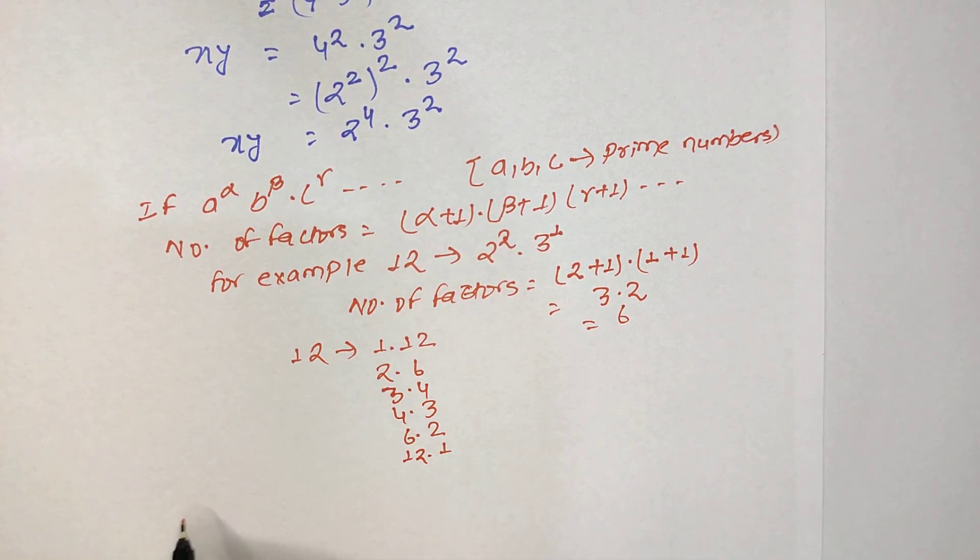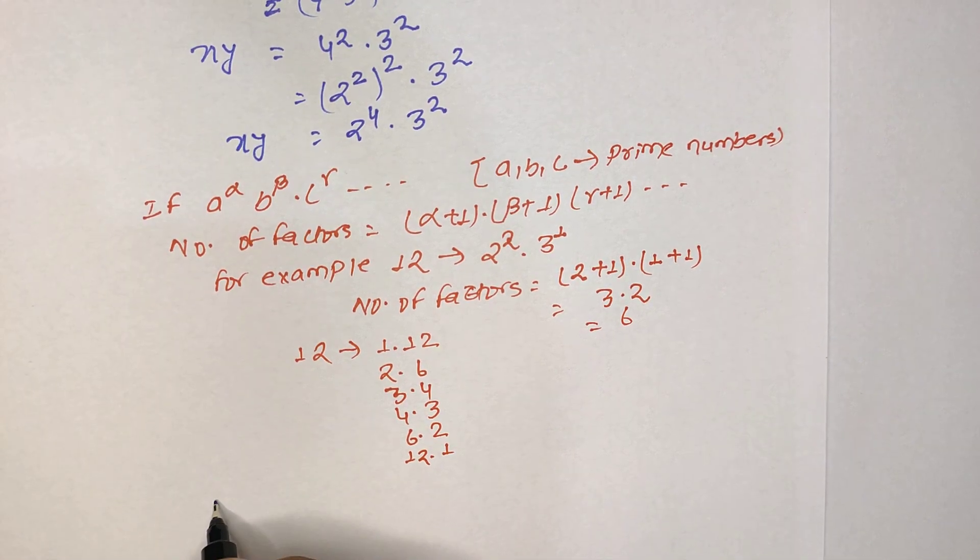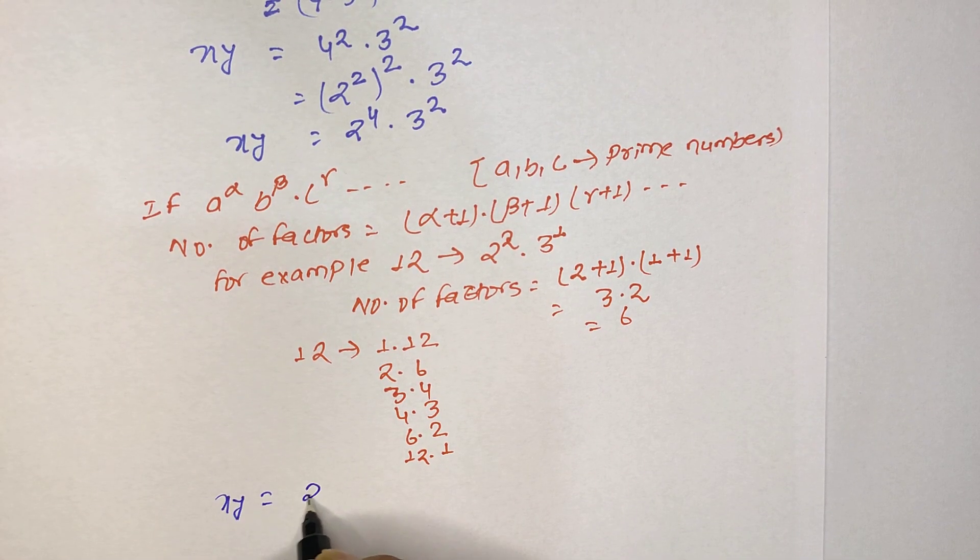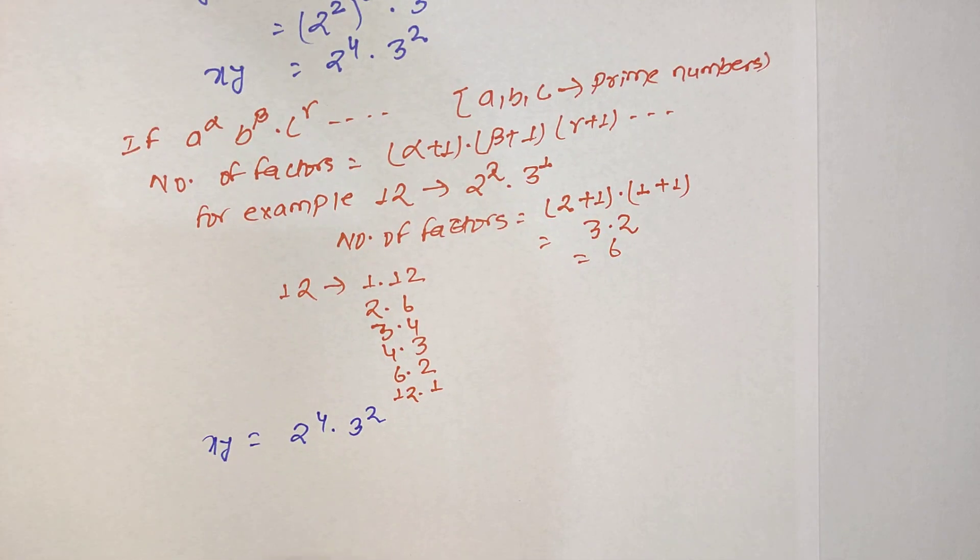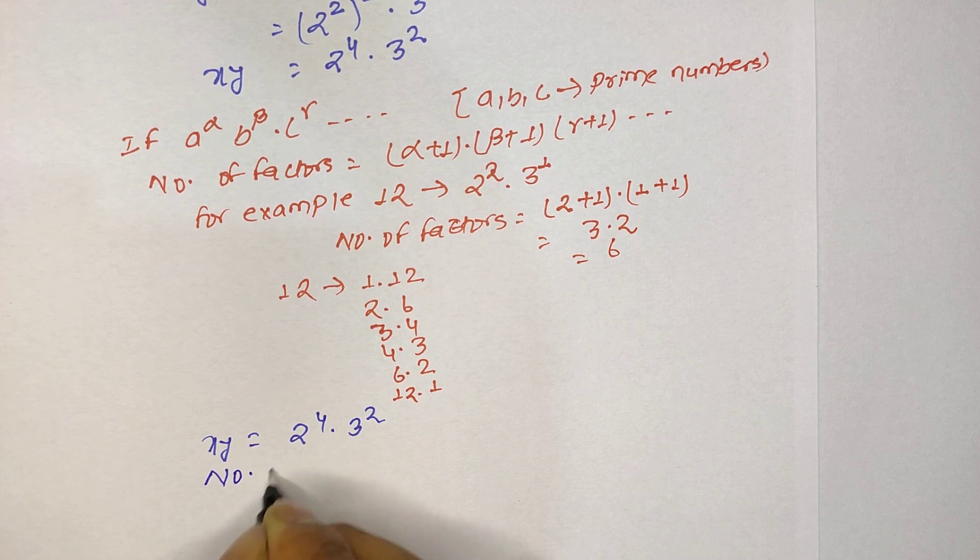So you can apply this concept in our equation. We have xy equals 2 power 4 times 3 power 2. As you see that 2 is also prime number and 3 is also prime number.